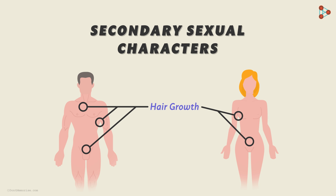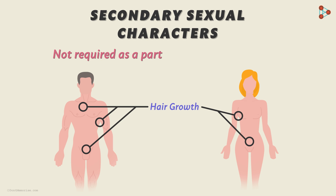So in a nutshell, the secondary sexual characters are those characters which are not really required as a part of the reproductive system. But do you know what exactly makes these secondary sexual characters develop during puberty?